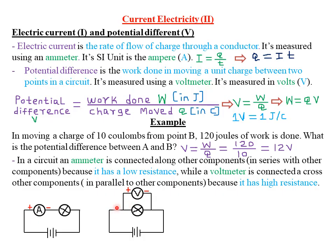If you connected a voltmeter in series, all the current from the battery, once it reaches the voltmeter, would be resisted, and the bulb or any other component in the circuit would not receive any current. Therefore, in an electrical circuit, a voltmeter is always connected across or in parallel with other components because it offers very high resistance to the flow of current.